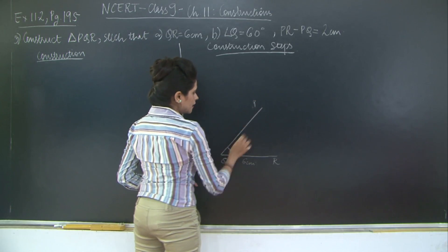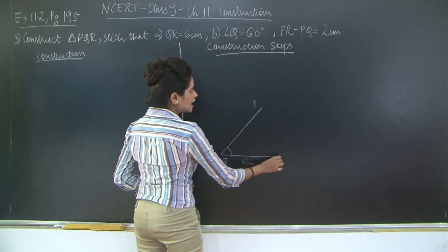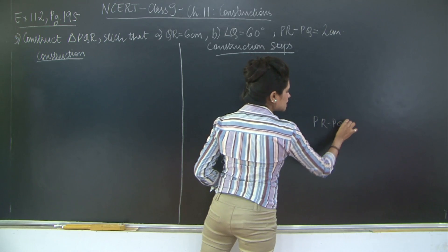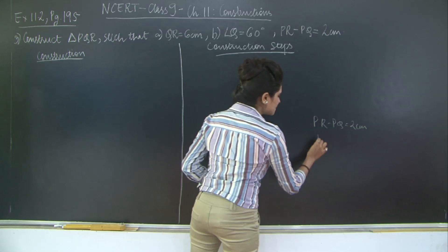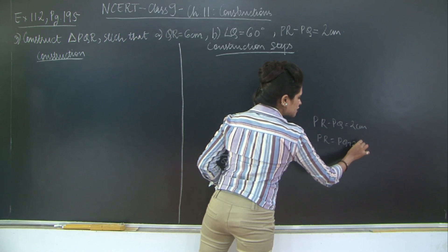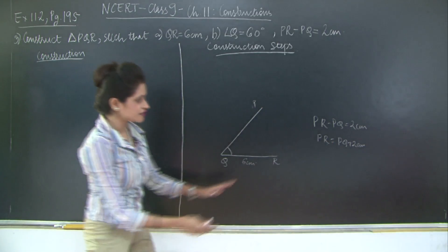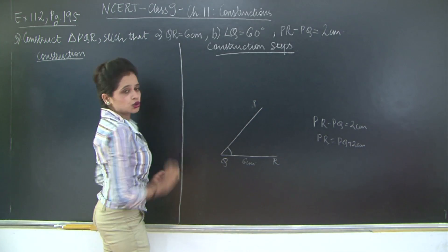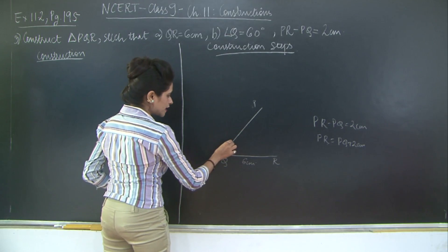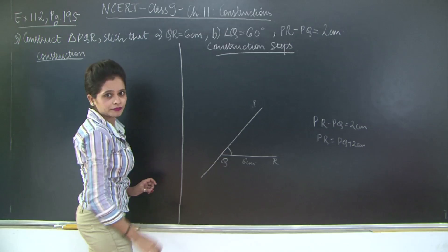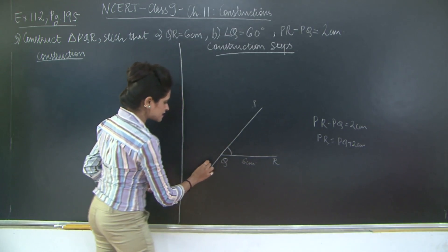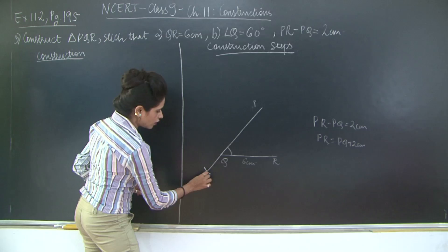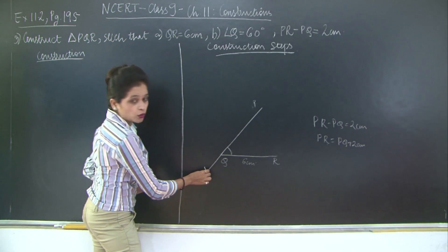Now what is the difference given? The difference given is PR minus PQ, that means PR is greater than PQ. We have PR minus PQ is equal to 2 centimeters, which means PR is equal to PQ plus 2 centimeters — so PR is greater than PQ. The difference PR minus PQ is 2 centimeters. What I am going to do is extend line PQ and take 2 centimeters on my compass and cut this on the extended side. Let's call this point Y. Now I will join Y to R.